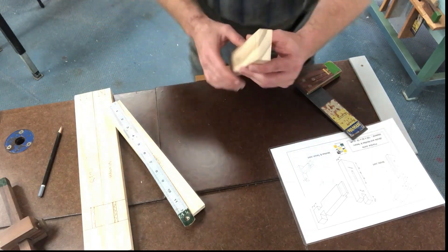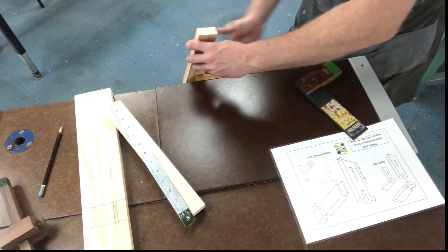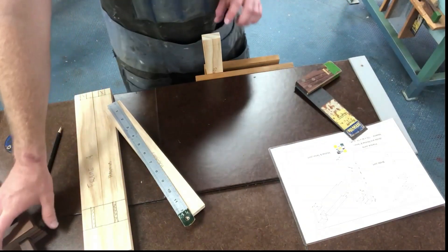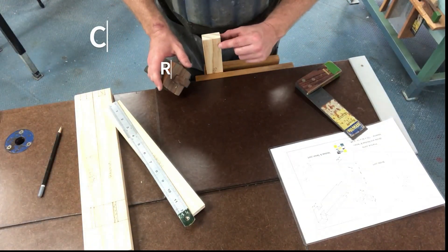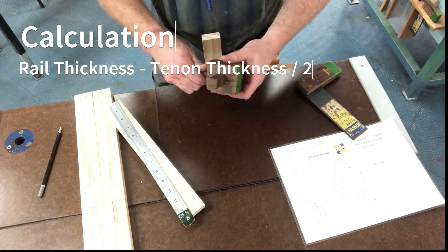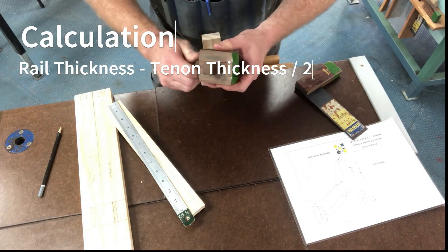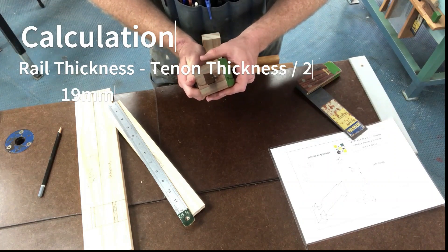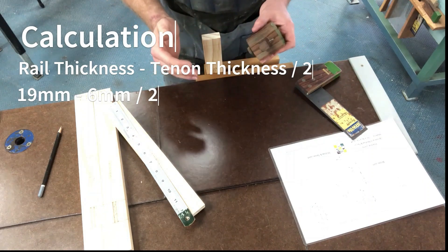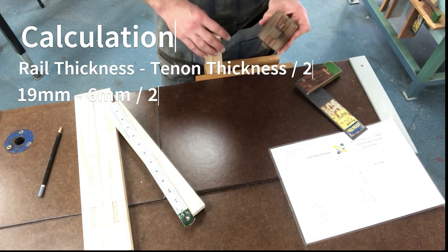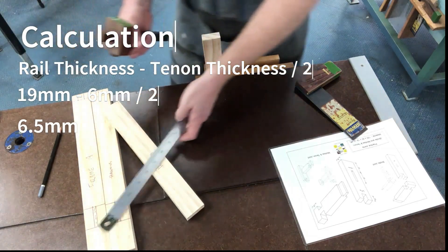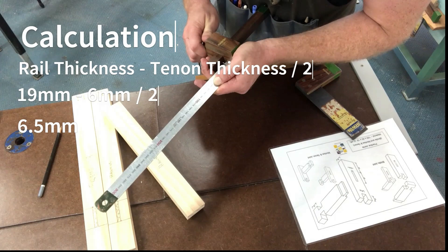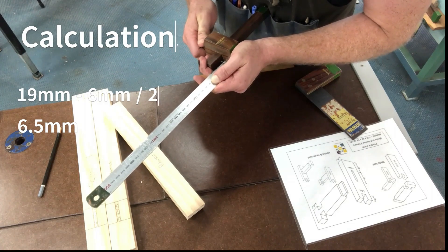From here we are going to mark our lines so we can determine where our mortise will be. Place your work in the vice like so. A little bit of maths again: our material is 19mm thick. We need to take the thickness of our tenon away from that. If we take 6 away from 19, that gives us 13, and then what we have to do is we have to halve that. So half of that is 6.5mm. So grab your steel rule and your marking gauge and set that to 6.5.